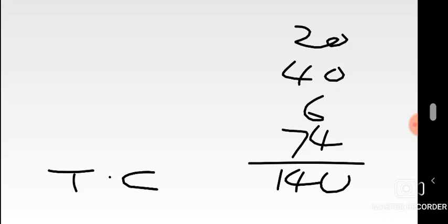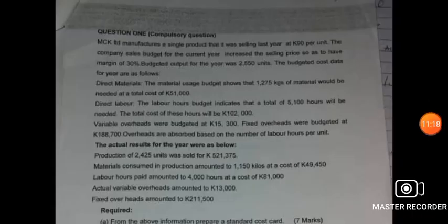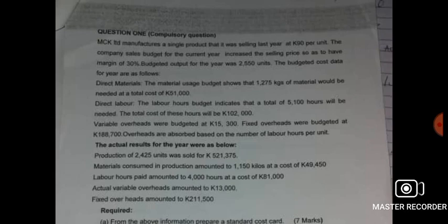They've also stated that the selling price has been increased to achieve a margin of 30%. So after finding total cost per unit, we can include the profit and selling price to complete the cost card. They've increased the selling price from the old 90 and are now stating the new selling price should have a margin of 30%. Margin is a form of profit, so we need to find the profit amount to add to total cost.